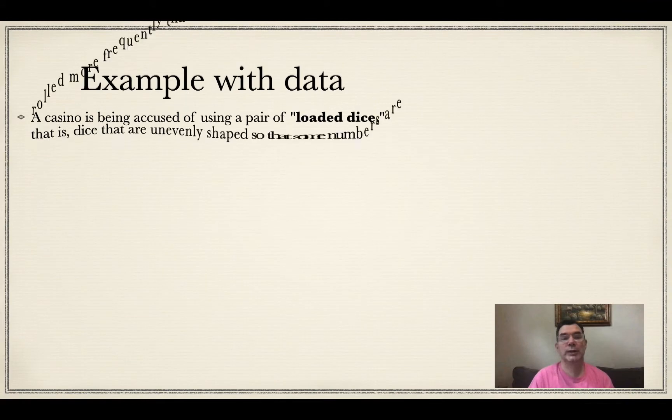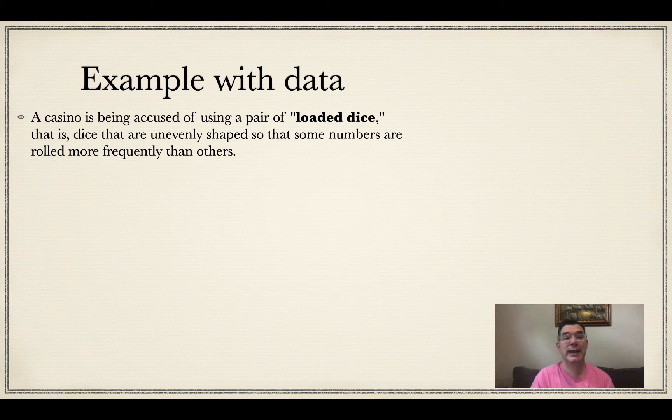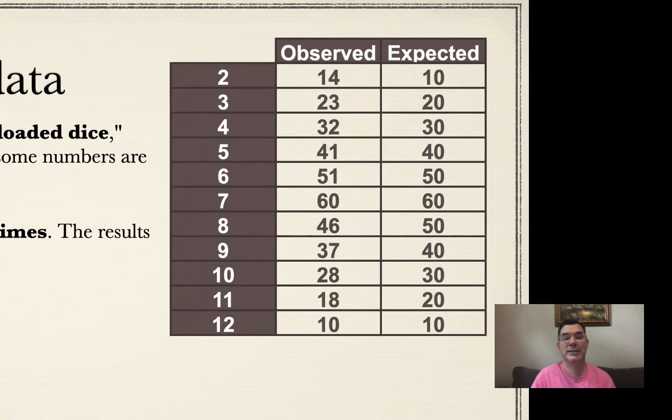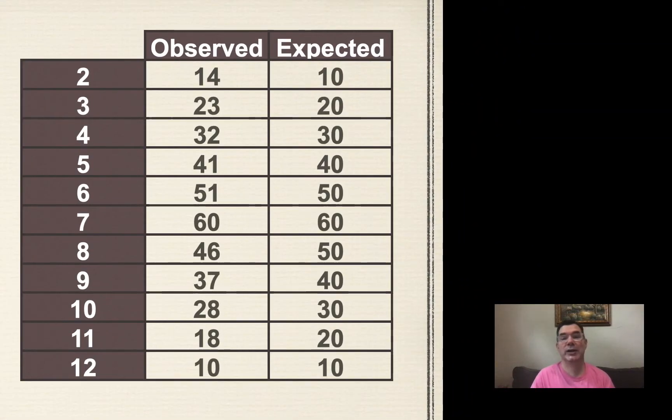So let's look at an example where we have data. There's a casino that is being accused of using a pair of loaded dice. That means that the dice are unevenly shaped so that some numbers are rolled more frequently than others. So to test this, what I did was I rolled that pair of dice 360 times, and here are the results. So in the first column, I have the observed number of times that a 2 was rolled, 3 was rolled, 4 was rolled, all the way up to 12, which is the highest dice you can roll.